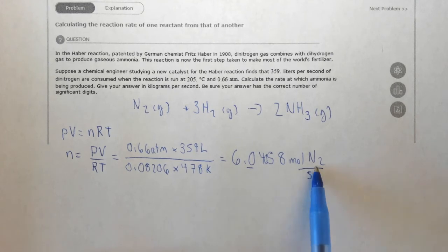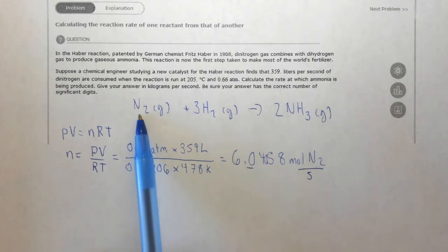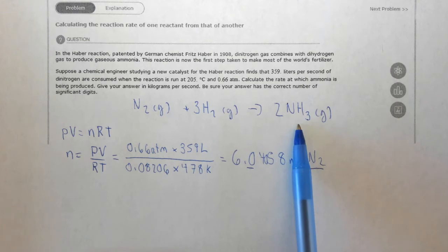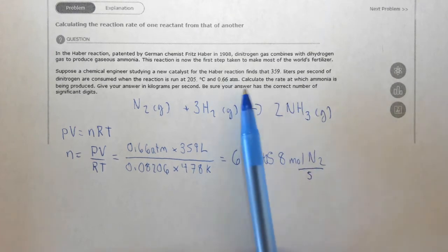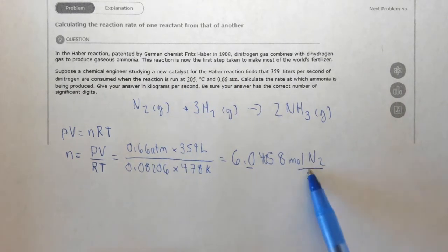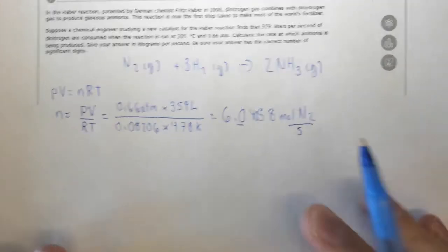We now need to convert from moles of nitrogen, using the balanced chemical equation, to moles of ammonia, to grams of ammonia, but then to kilograms of ammonia. Note that the per second just goes along for a ride.